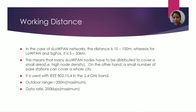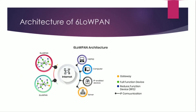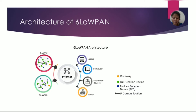This is the 6LoWPAN working distance overview. For the 6LoWPAN architecture, we need a router — that is, an internet connection, Wi-Fi, or a hotspot. We will communicate with various sensors.